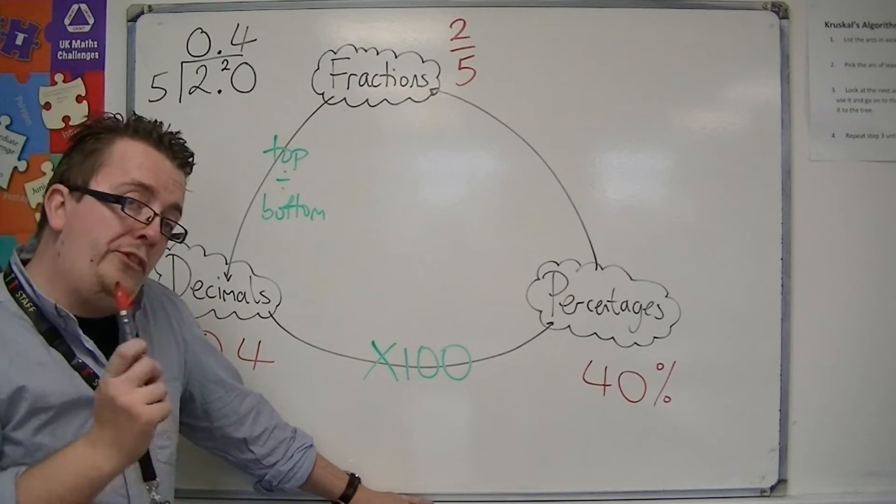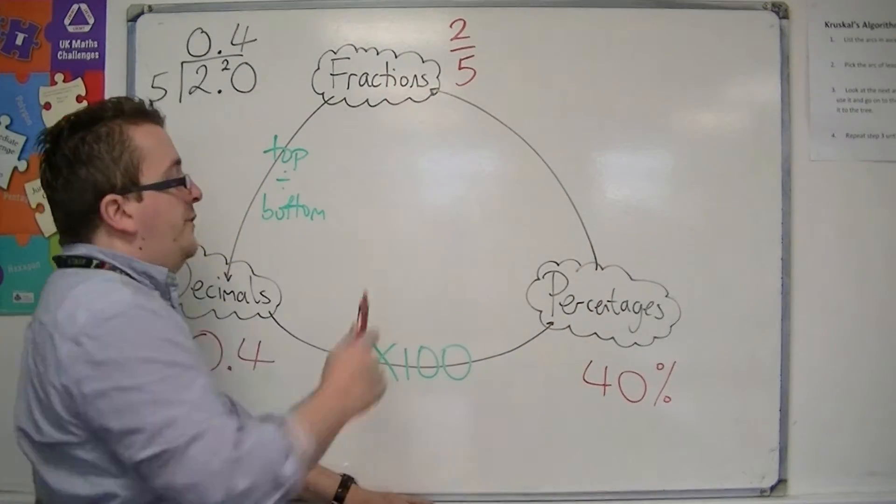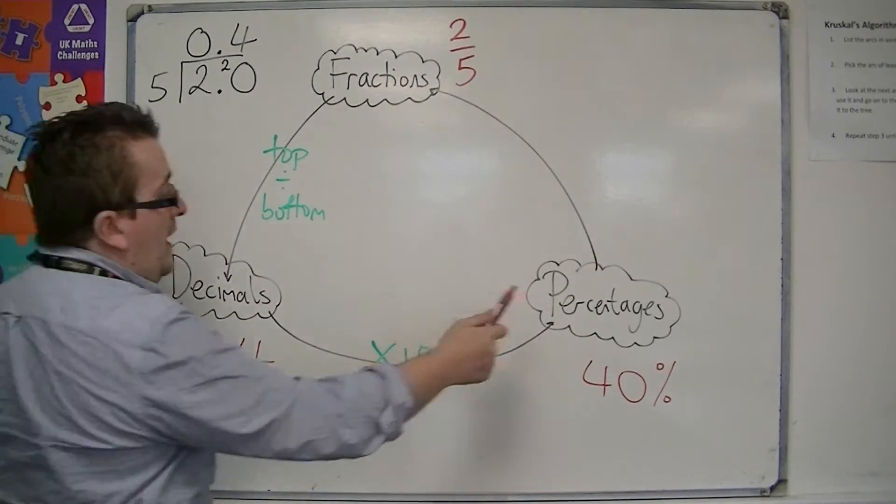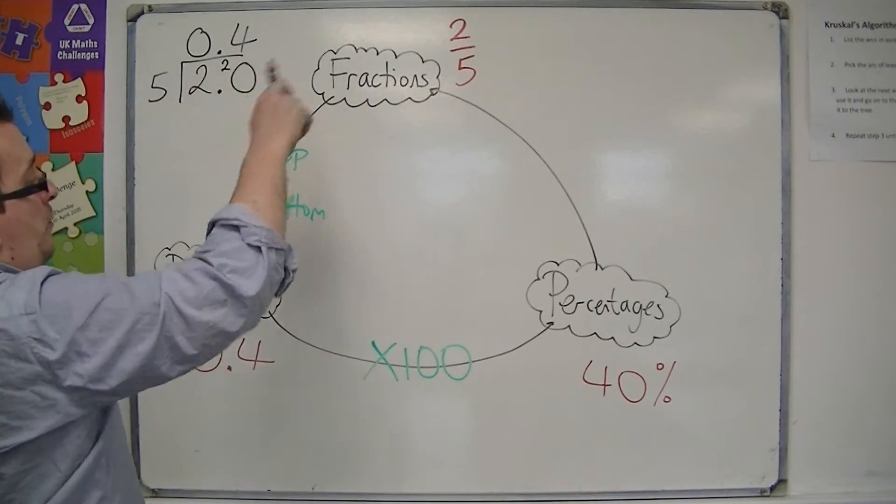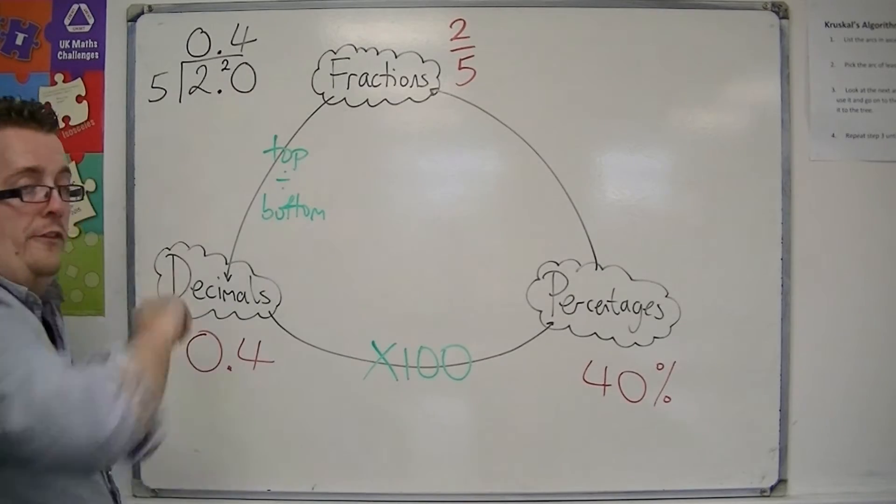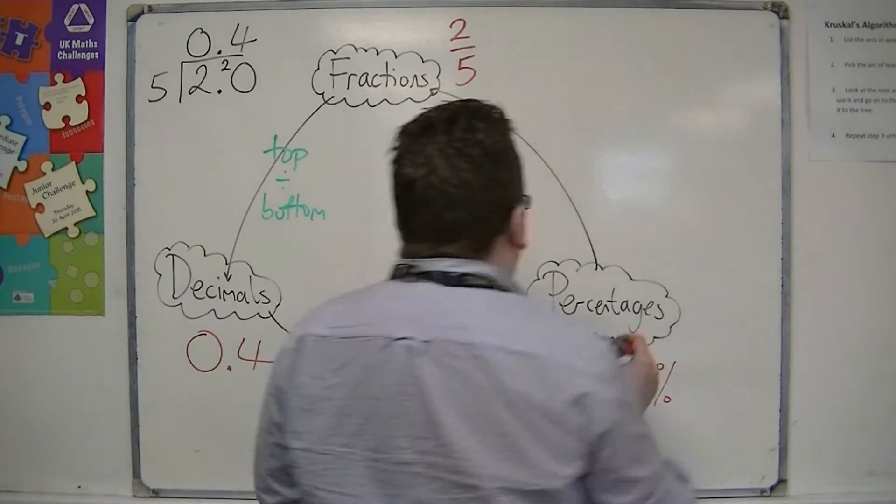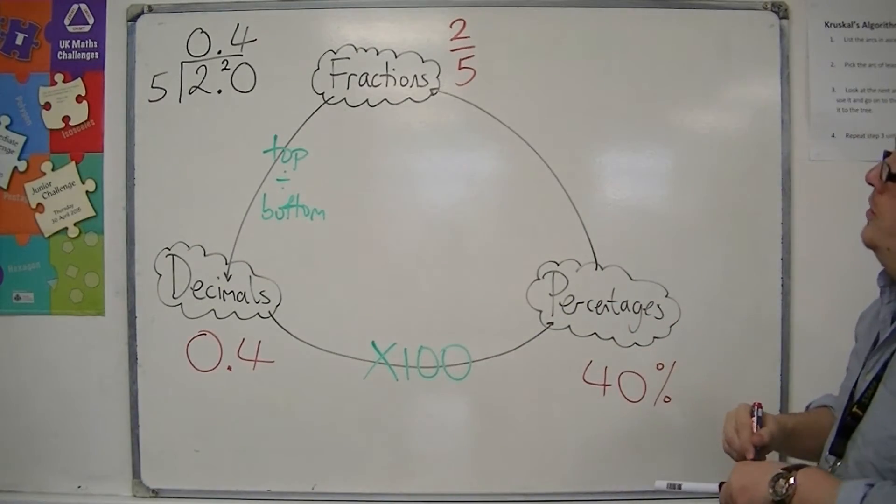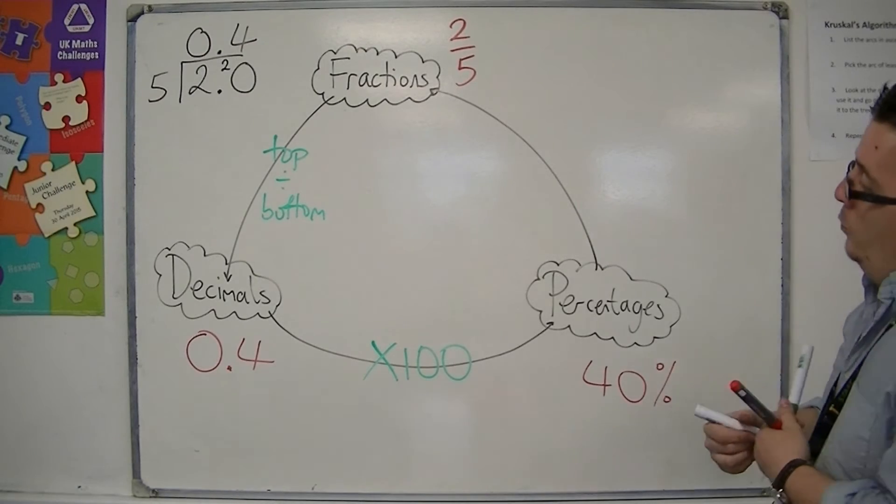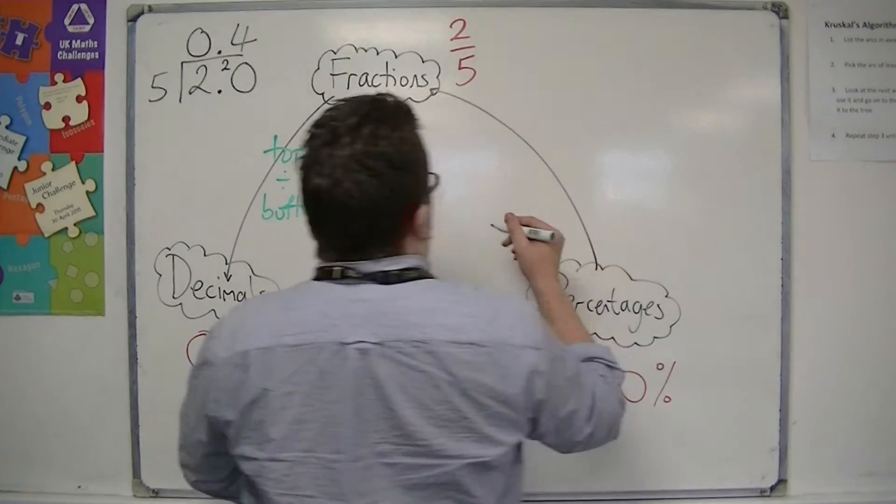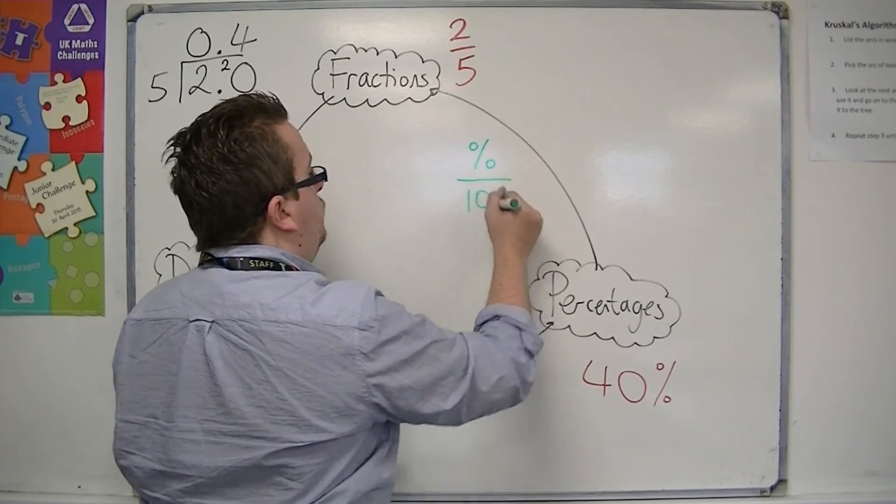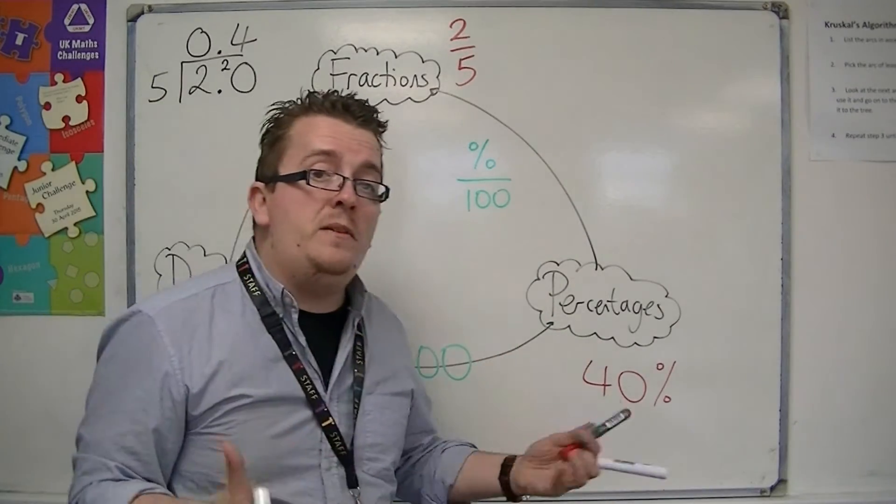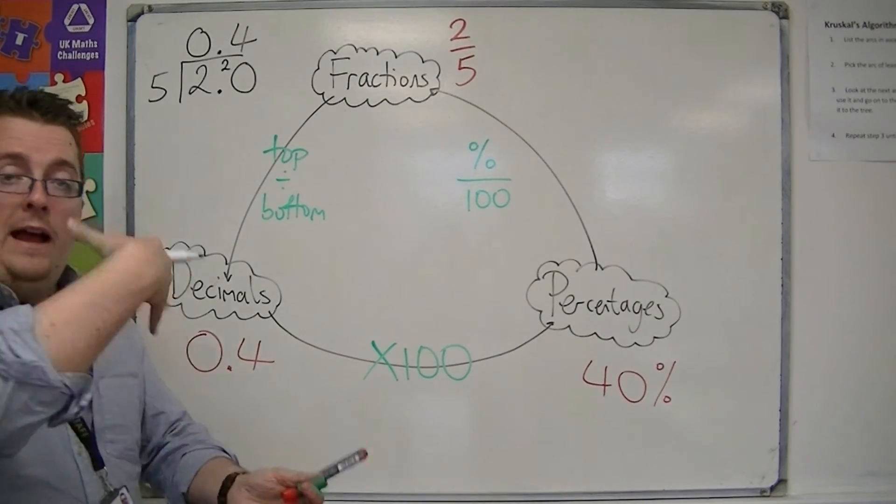We also want to be able to go from the percentage back to the fraction. Because if we've got that process covered, then we can turn any decimal, fraction, or percentage into any other format. So to get from a percentage to a fraction, we write the percentage over 100, because percent means out of 100 anyway.